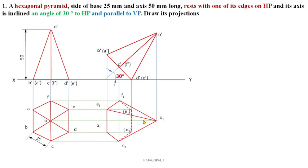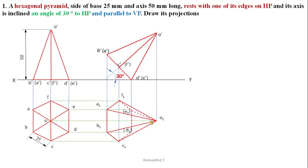So O1-A1 and O1-B1 are visible from the top view. O' will be visible, but O'D' and O'E' are invisible from the top view. So the bottom slant edges — O'D' and O'E' — are invisible for an observer from the top view.